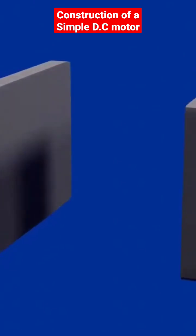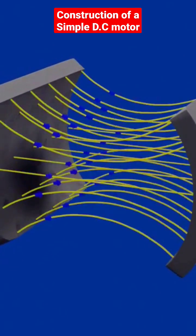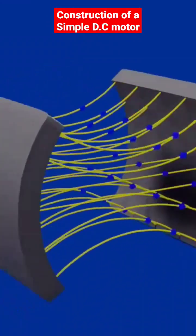In this case, these are permanent magnets, which are curved in shape to make their magnetic field radial. And their magnetic field is directed from north pole to south pole.